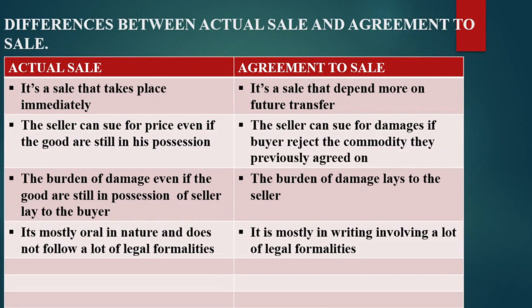Welcome to a lesson covering the difference between actual sale and agreement to sale. One difference is that actual sale is a sale that takes place immediately — for example, you go to a kiosk, you purchase a packet, and it is transferred to you immediately. An agreement to sale, on the other hand, is a sale that depends on future transfer.